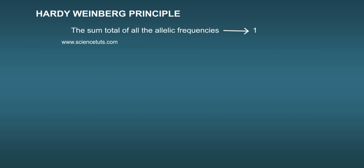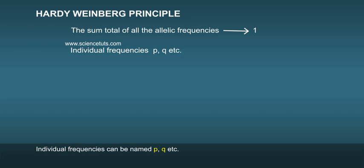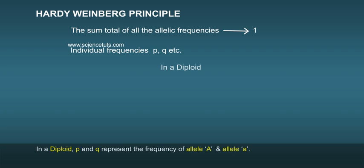The sum total of all the allelic frequencies is 1. In a diploid, p and q represent the frequency of allele A and allele a.